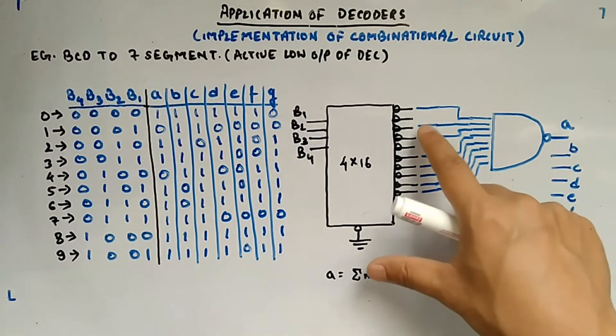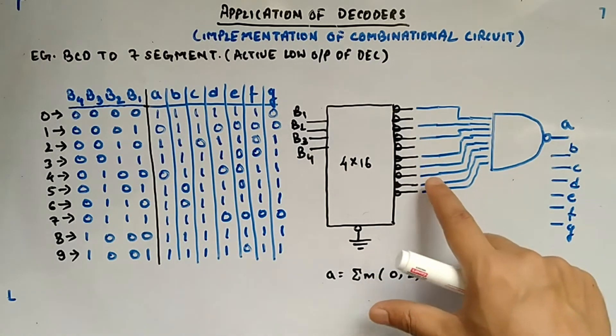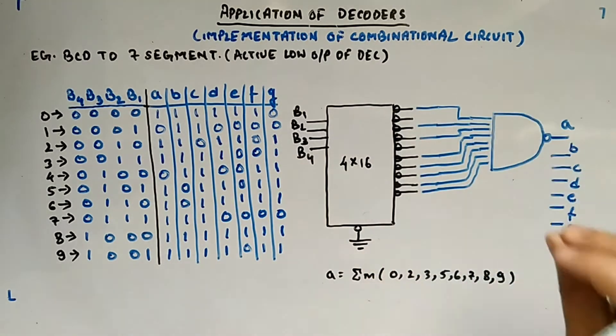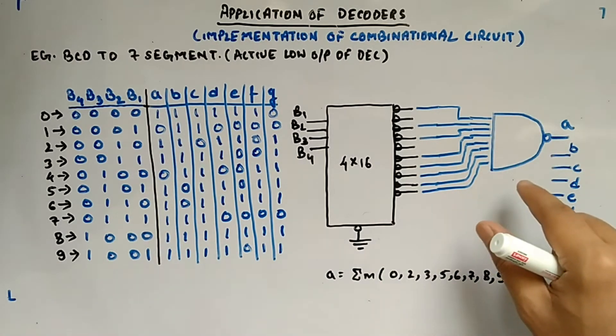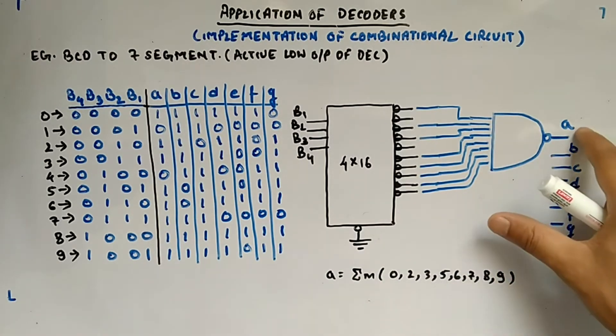So 0, 2, 3, 5, 6, 7, 8, 9, all this you have taken, given it to a NAND gate and you are getting A.